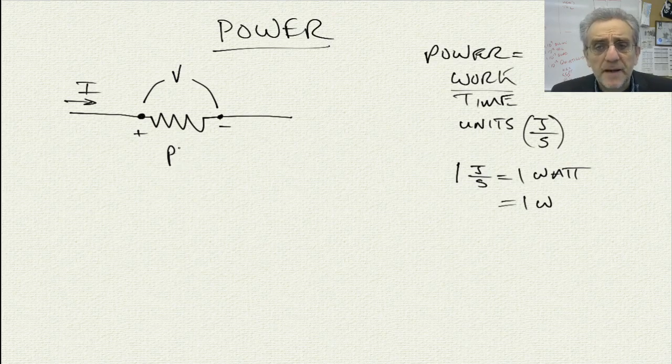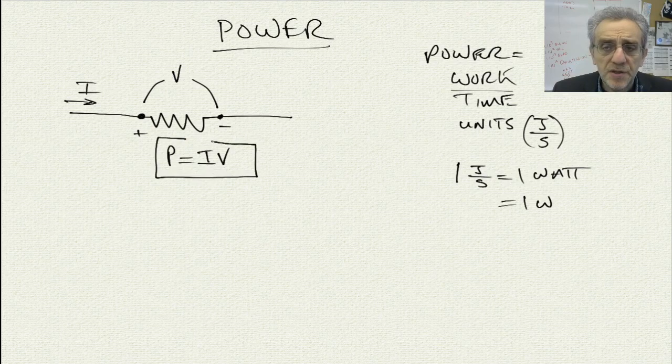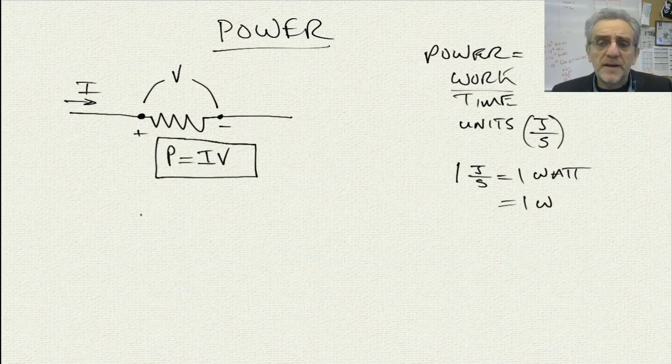Now, if we multiply current times voltage, this equation here is the general form of the power equation, but we can actually create two different versions of it.